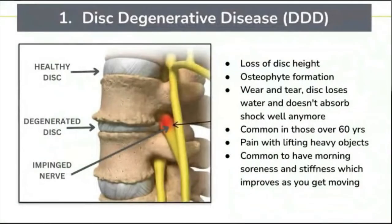Number one is disc degenerative disease. In this condition, there's a loss of disc height. You can see above there's a healthy disc — it's nice and thick, full of fluid. Below it, there's a degenerative disc with loss of height, less space for that nerve to come out of. In that degenerative disc, there's also osteophyte formation — with a little bit of grinding and wear and tear, the bones become spurred.